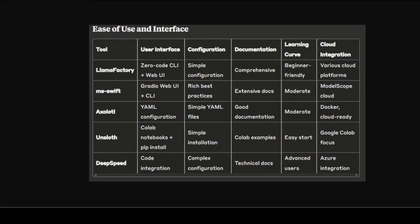Looking at ease of use and interface: LLaMA Factory and MS Swift emerge as the most user-friendly options, both offering comprehensive web interfaces that eliminate the need for complex configuration. LLaMA Factory's zero-code approach is particularly appealing for beginners, while Swift provides extensive best practices and documentation through their Gradio interface. Axolotl strikes a middle ground with its YAML configuration system — quite ideal for users who want reproducible, version-controlled training setups. Unsloth prioritizes quick start with excellent Colab notebook integration and simple pip installation, making it good for experimentation and learning. DeepSpeed, while powerful, requires the steepest learning curve and is primarily designed for users with deep technical expertise in distributed systems.